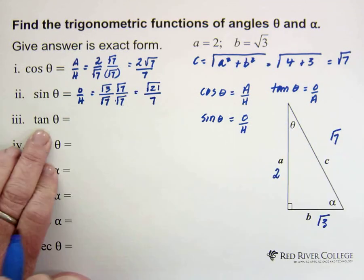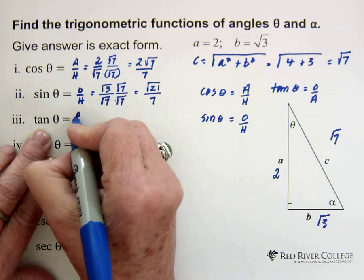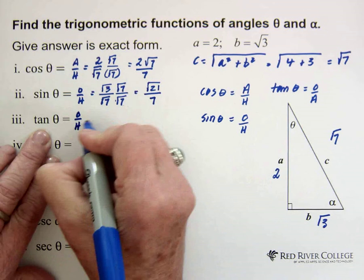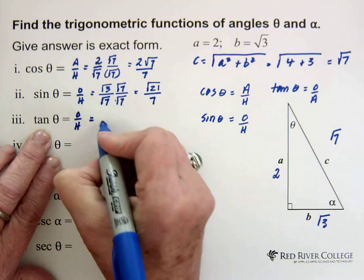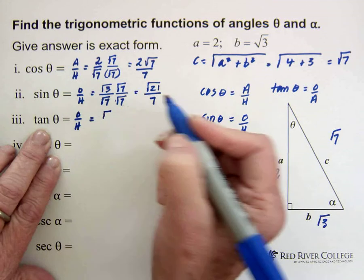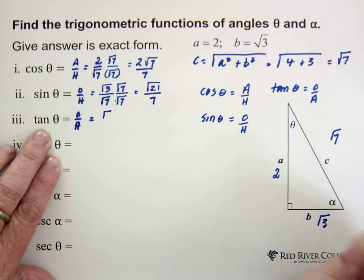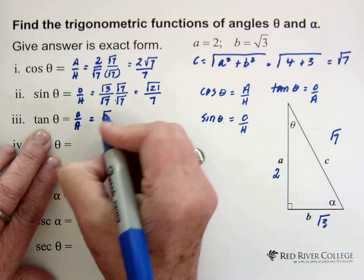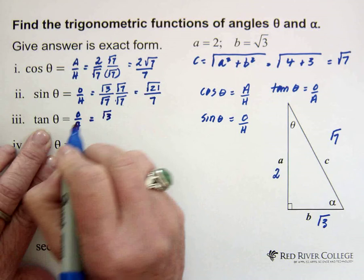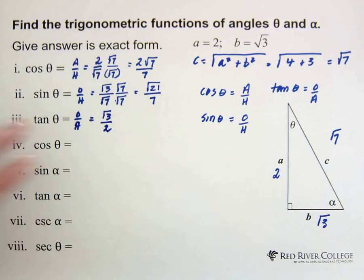Tan of theta. Tan of theta is opposite over adjacent. The opposite of theta is the square root of 3, and the adjacent is 2, so we get the square root of 3 over 2. We don't have a radical in the denominator, so we don't have to do anything. This is good enough.